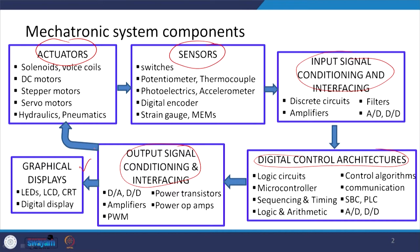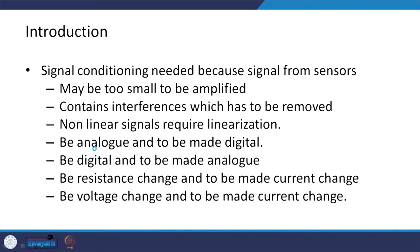How the sensor signals can be interfaced to your microcontroller — let us look at what are the basic requirements for signal conditioning. Signal conditioning is needed because whatever signal we get from the sensor, this signal may be too small and needs to be amplified, or they may have certain interferences which need to be removed. Many times this signal could be a non-linear signal and we may require a linearization process, or the signal could be an analog signal.